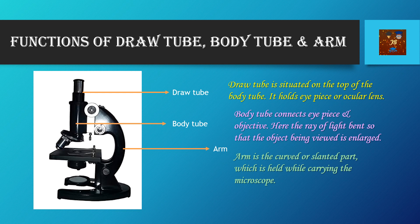Regarding the function of the draw tube: the draw tube is situated at the top of the body tube. The draw tube holds the optical part, that is the eyepiece or the ocular lens. Regarding the body tube, it connects the eyepiece or the ocular lens with the objectives, so the two lenses are connected by the body tube.